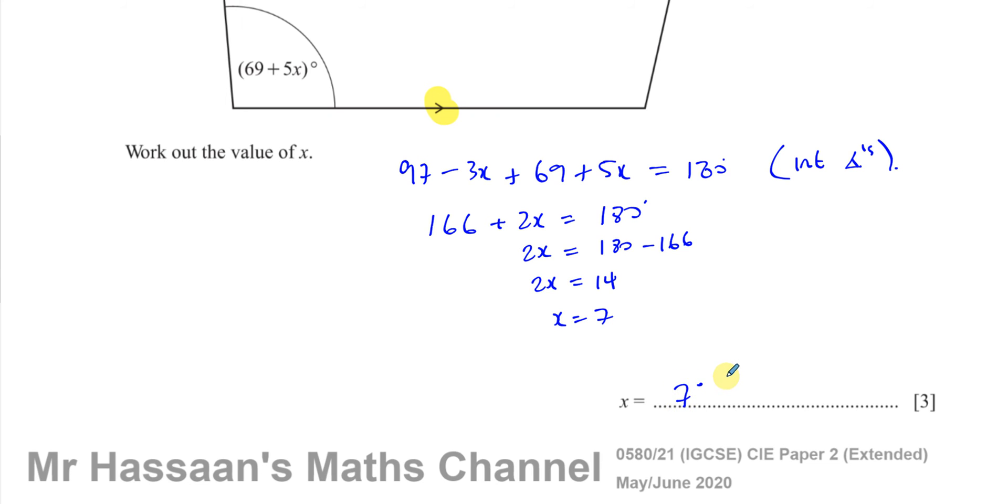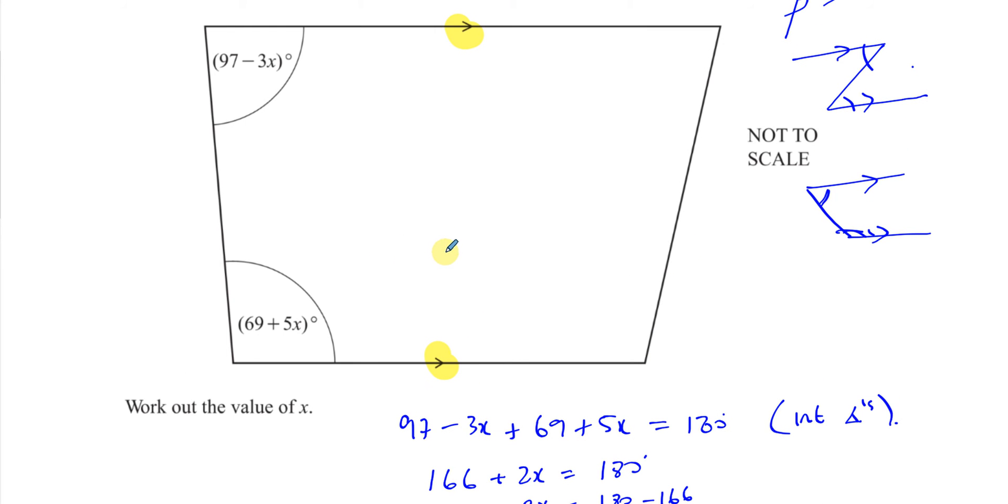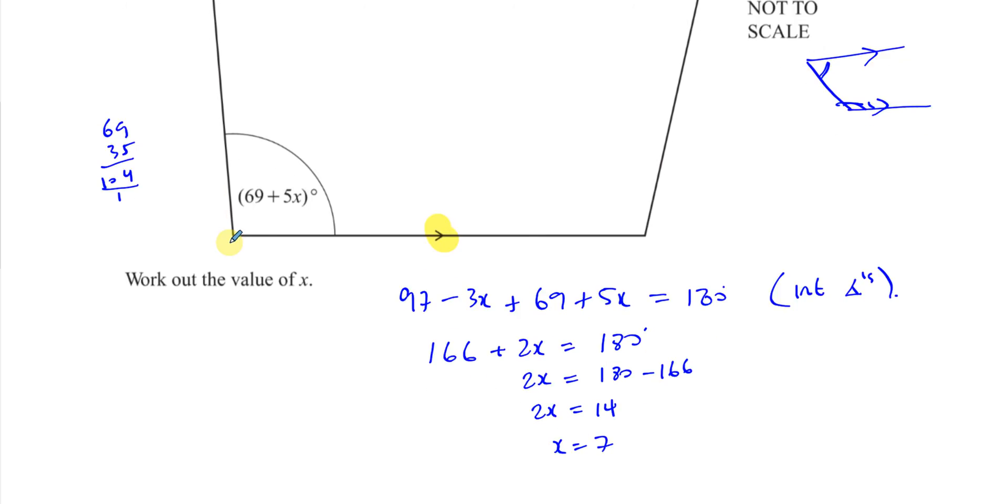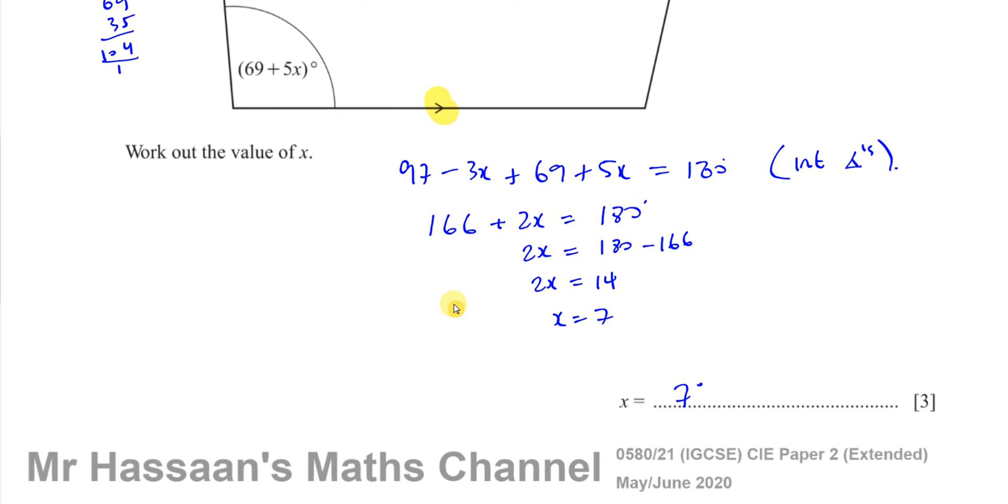And if you want to just make sure that you have not made a mistake, you can just put 7 here. So that's 97 minus 21, which is 76. And 69 plus 5 times 7, which is 35, gives you 104. And if you add them together, 104 plus 76 is equal to 180. You can just make sure if you want to in the exam that you've got the right answer.